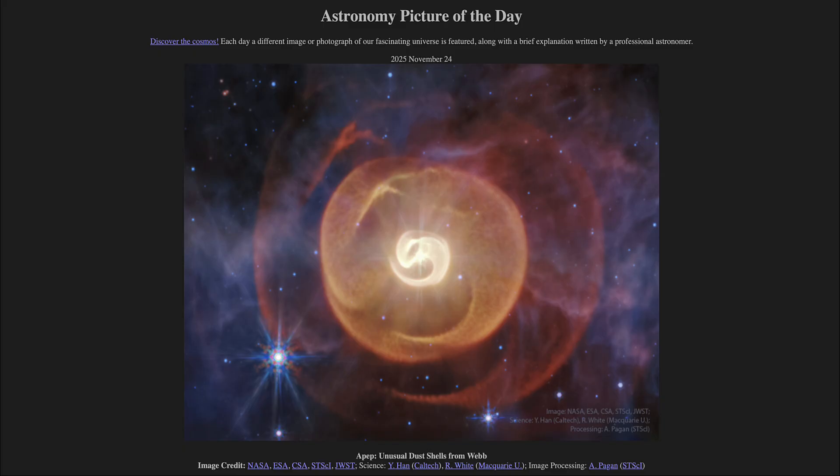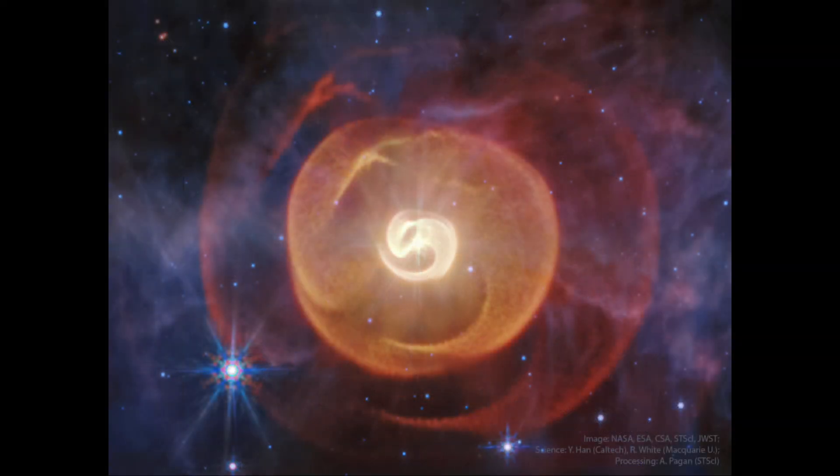So what do we see here? Here we see an object known as APEP, and that is an unusual object in that it is made up of a couple of very hot stars orbiting, and as they orbit, shells of material are being expelled.